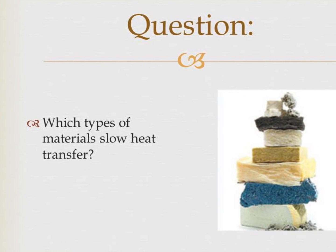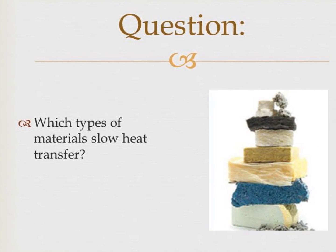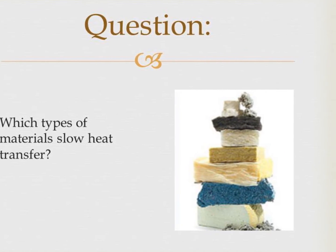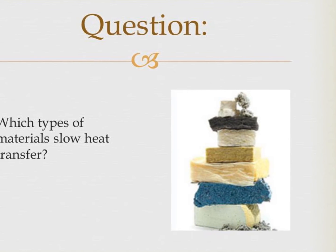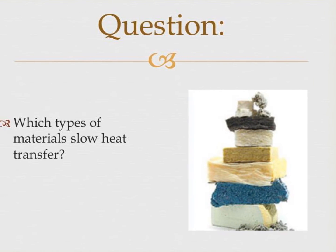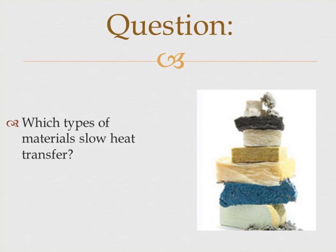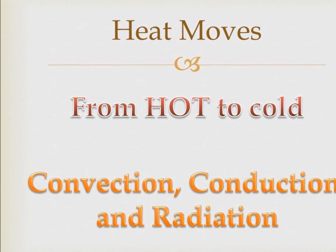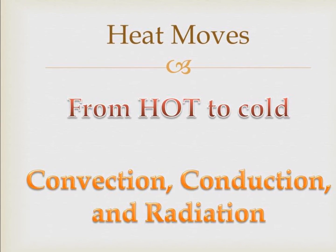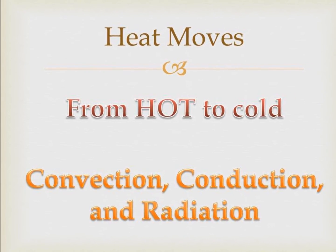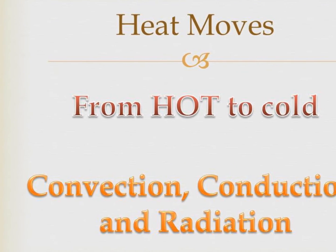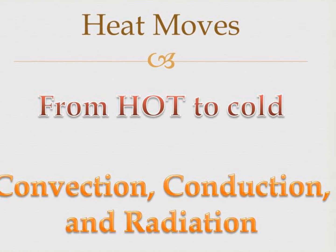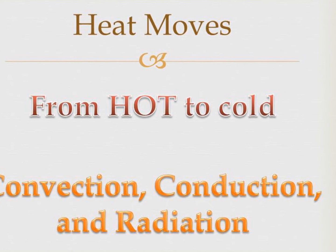First of all, we're trying to figure out what materials slow heat transfer. I have a beautiful picture of insulation here. That's something that's in the walls of your house to make your house stay warm and keep the cold out in the winter, and it does lots of other things too. In general, heat moves from hot objects to cold objects, and it does that through three different ways: convection, conduction, and radiation.